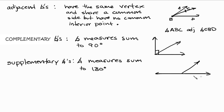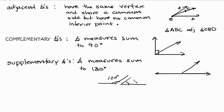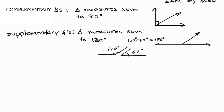No, supplementary angles don't have to be adjacent at all — they can be separate. For example, one angle can be 120 degrees and another can be 60 degrees, and if you add them together you get 180 degrees. So 120 plus 60 equals 180. And the last pair of angles we're going to talk about are vertical angles.